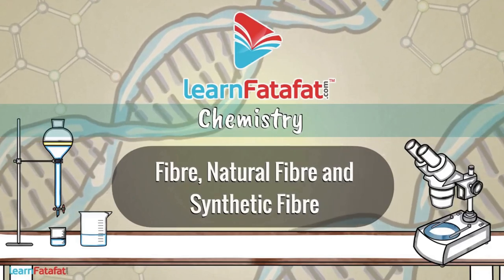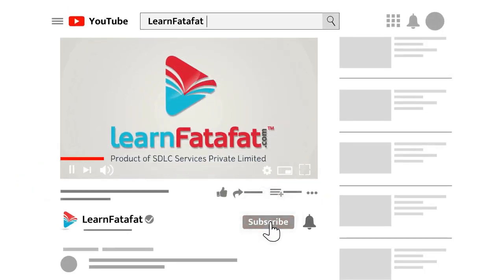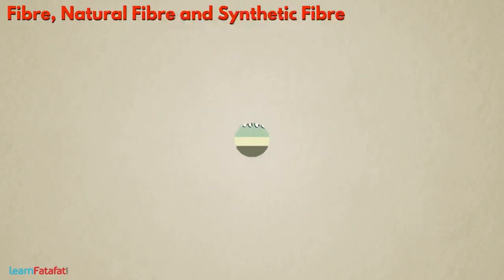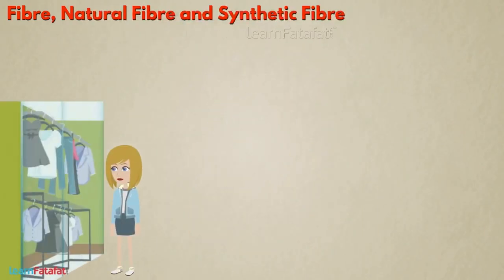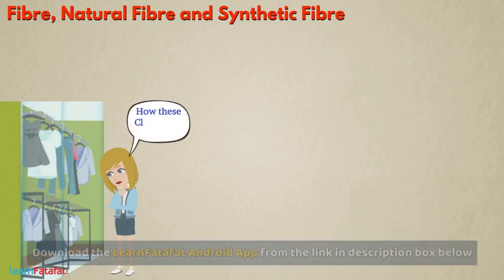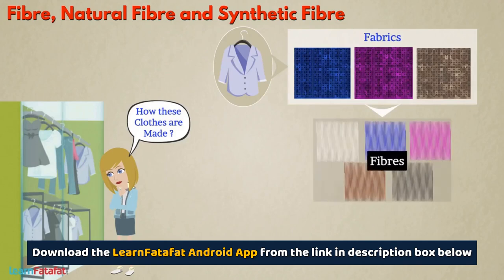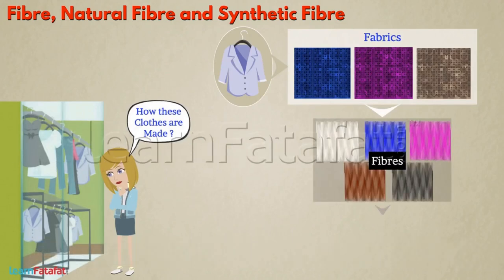Fibre, Natural Fibre and Synthetic Fibre. You have a variety of dresses in your cupboard. Have you ever thought about where these clothes come from? Or more specifically, how these clothes are made? Dear students, the clothes are made of fabrics and fabrics are made from fibres. A fibre is basically a string made of some material.